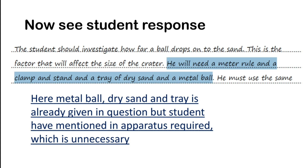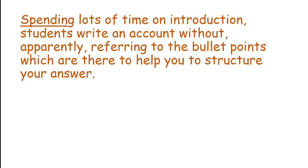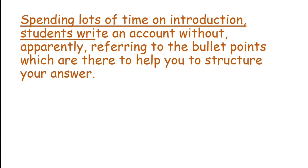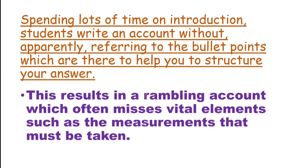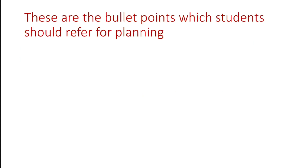Metal ball, dry sand, and tray are already given in the question, so mentioning them again in 'apparatus required' is unnecessary and wastes time. Another mistake is that students write an account without apparently referring to the bullet points which are there to help structure your answer. This results in a rambling account which often misses vital elements such as the measurements that must be taken. These are the bullet points which students should refer to when planning.